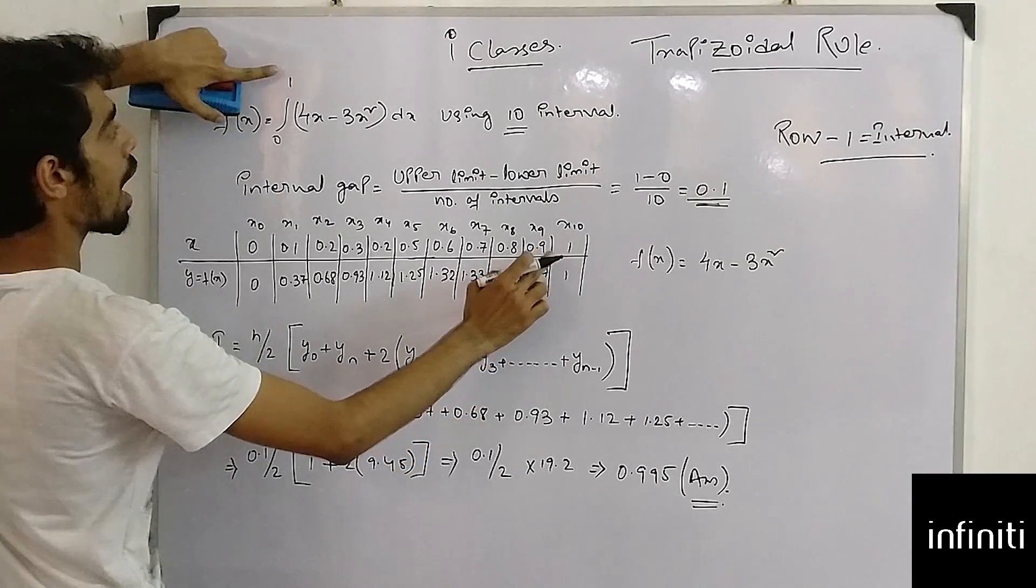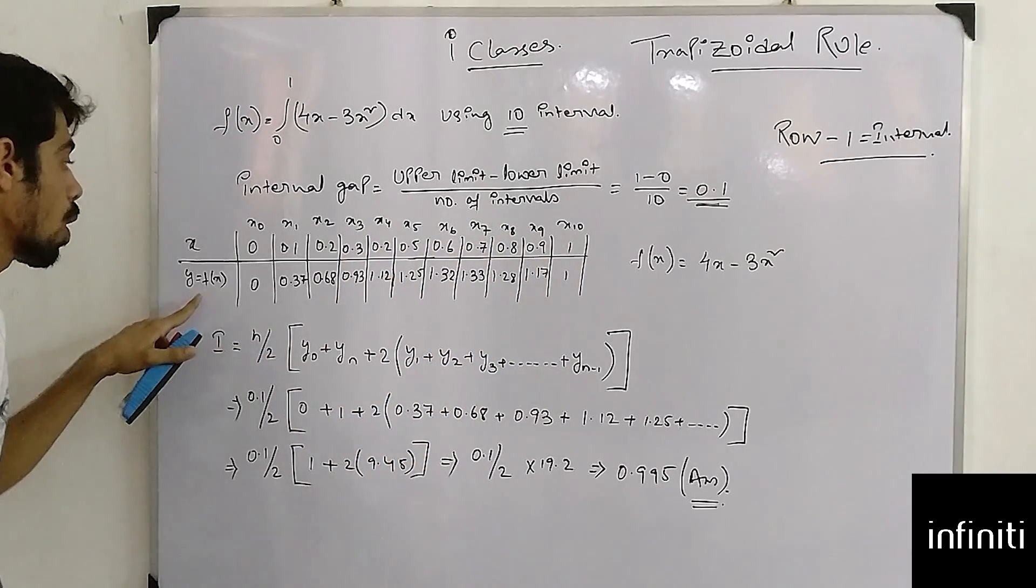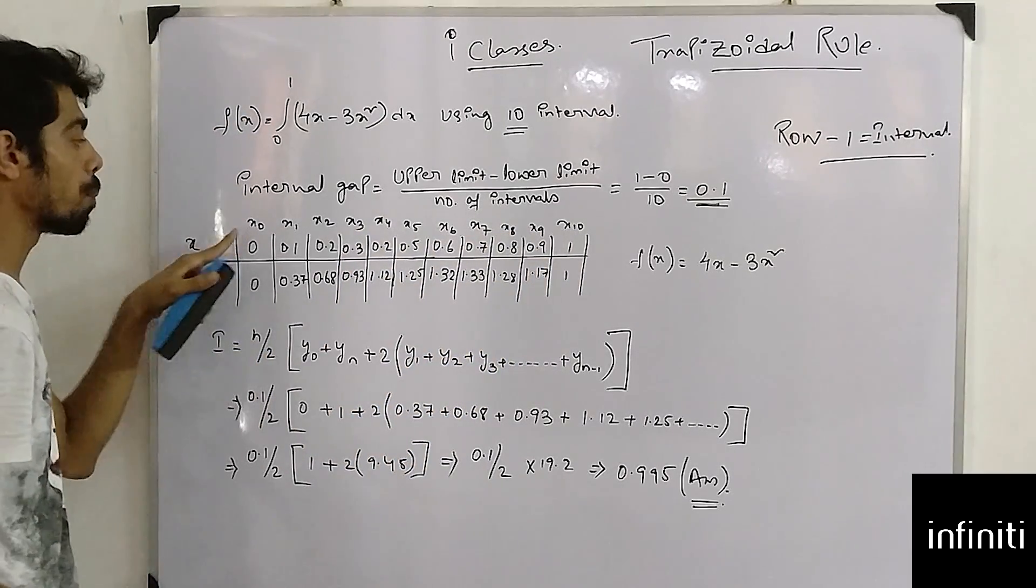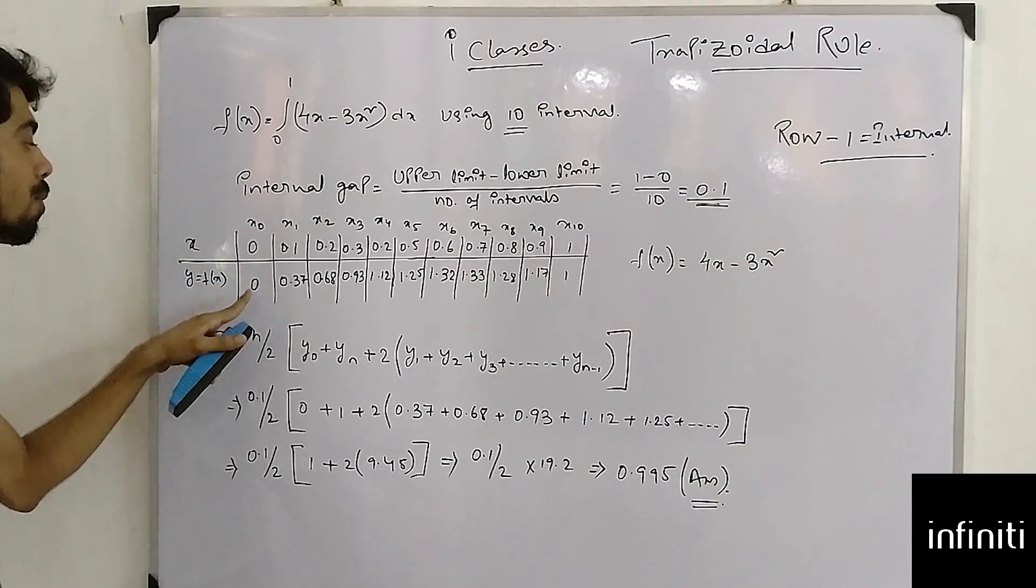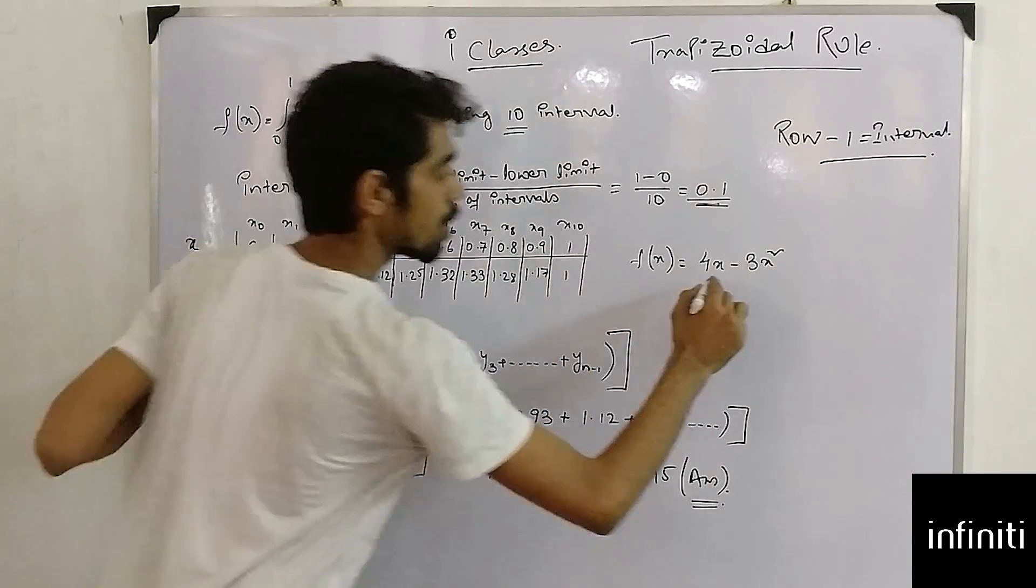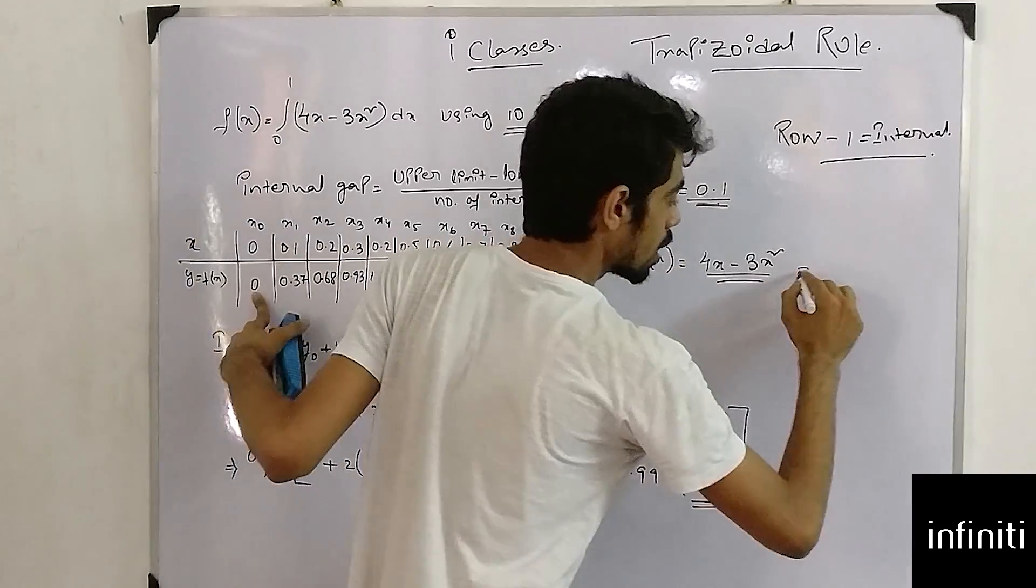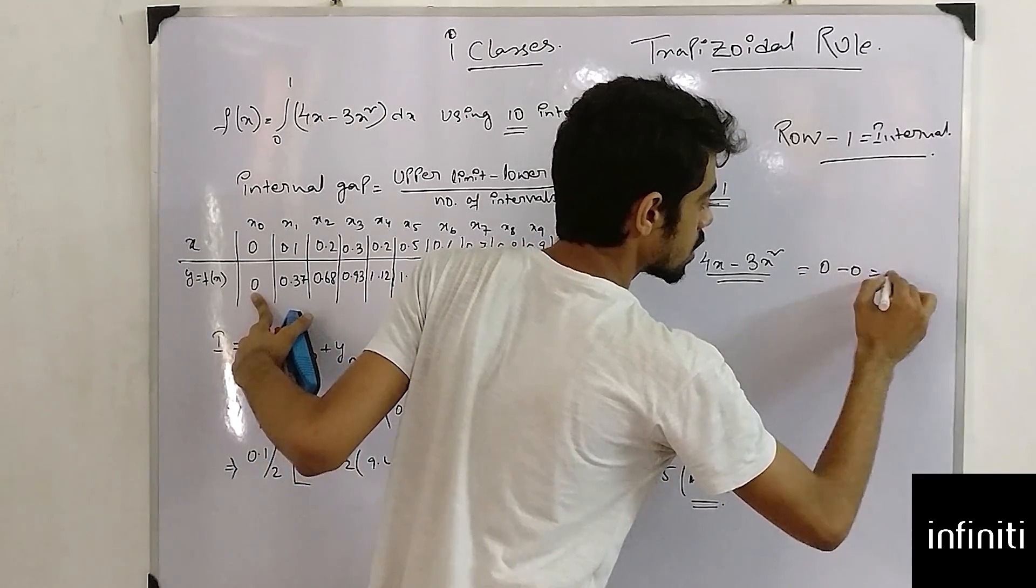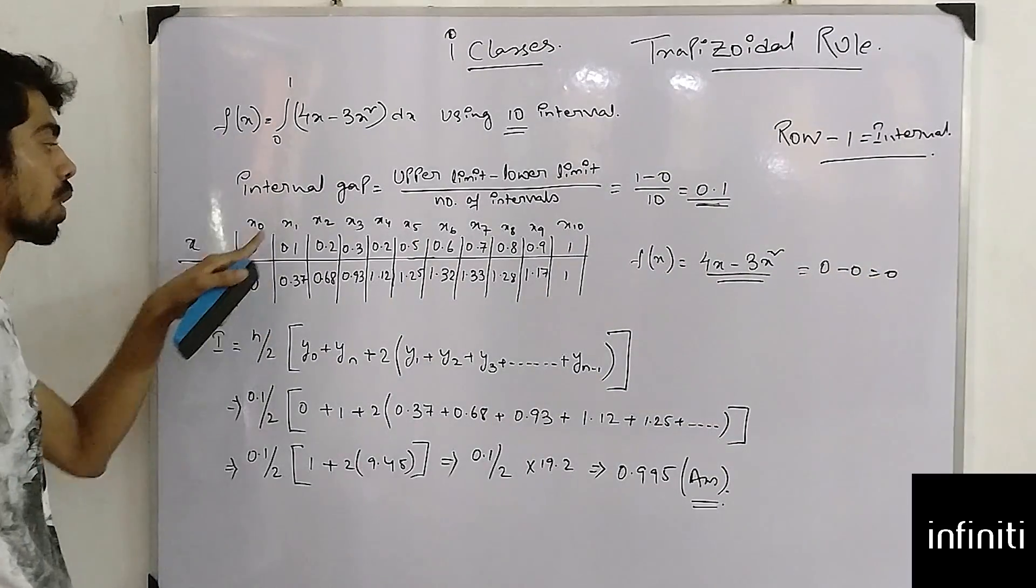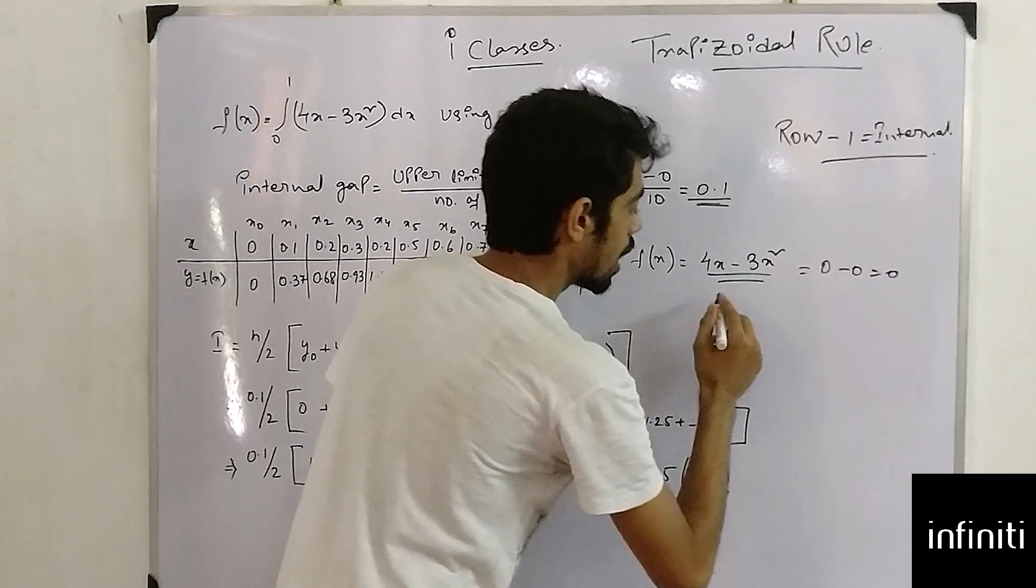Now what I have to do: I have to put my value of x0 and find my fx which is over here. If I put 0 in x, what will I get? 0 minus 0 which is 0, so I have written over here.